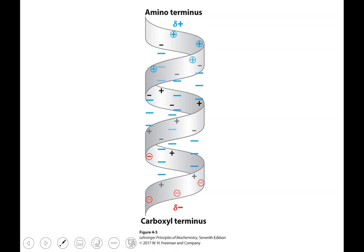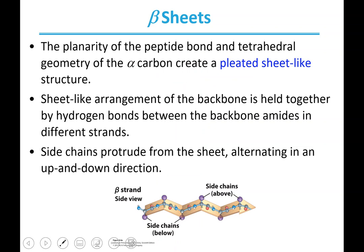In a three-dimensional protein structure, you often see cases where an alpha helix goes one way, then there's a turn and another alpha helix coming down, creating opposite dipoles on the two helices.